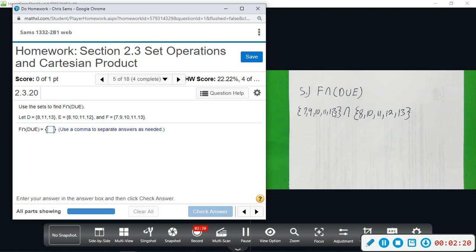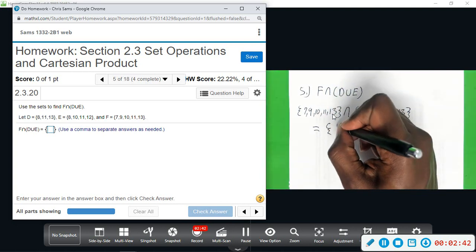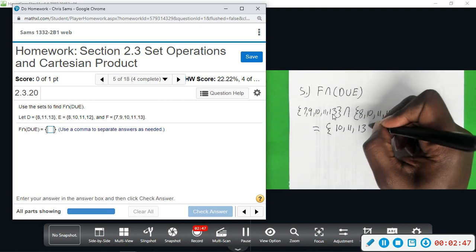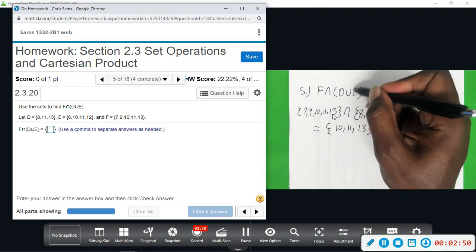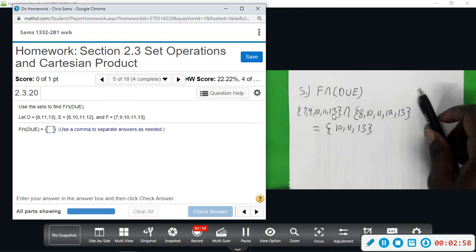Now, intersection wants to know what do they have in common. Okay, so what does this set have in common with this set? Looking here, they do not have seven, eight, or nine in common. They have ten, they both have eleven, and they both have thirteen. Okay, so your final answer is going to be the set consisting of ten, eleven, and thirteen. Okay, so you've got to be very careful with these sets. Union means connect them, combine them together. This intersect means what do they have in common that overlaps. So just ten, eleven, and thirteen.